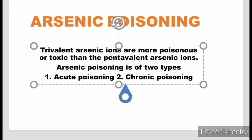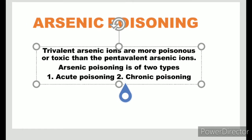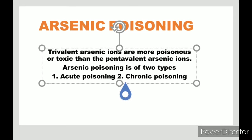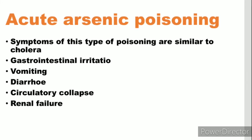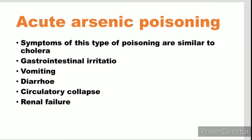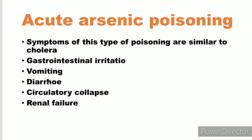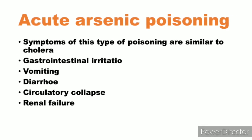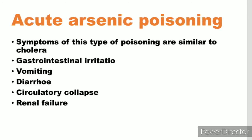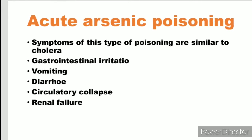Excessive administration of arsenic may lead to arsenic poisoning. Arsenic poisoning is of two types: acute poisoning and chronic poisoning. Acute arsenic poisoning symptoms include gastrointestinal irritation, vomiting, diarrhea, circulatory collapse, and renal failure.